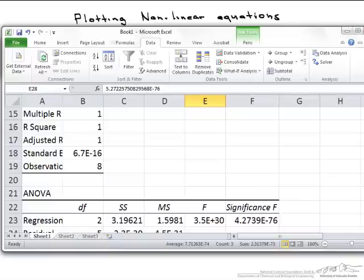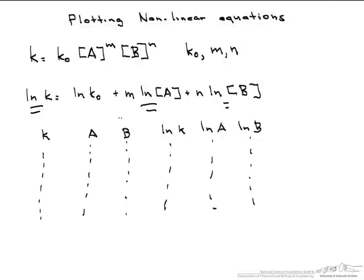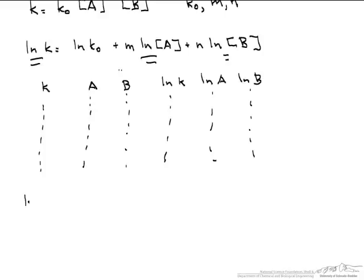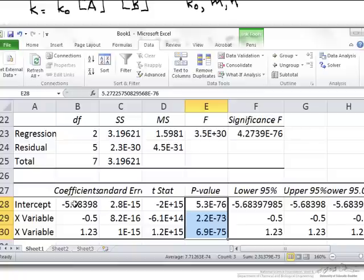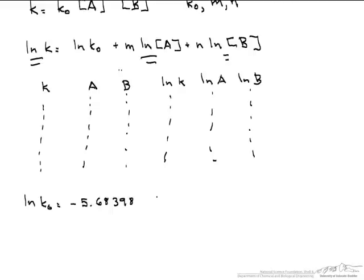So let's go back now that we know these numbers. Our ln of k0 is minus 5.68398. Let's go back and see where we got that. We got that from this intercept right here. So that's our ln of k0, but what we really want is k0, so that's e to the minus 5.68398. So our k0 equals 3.4 times 10 to the minus 3.